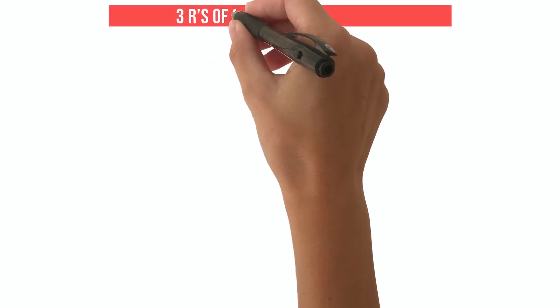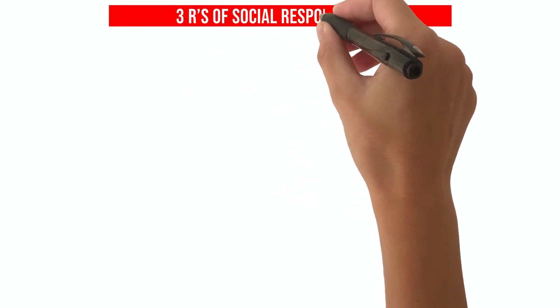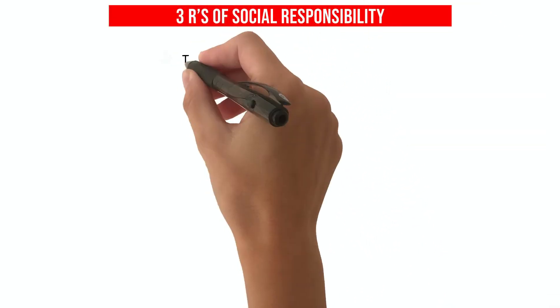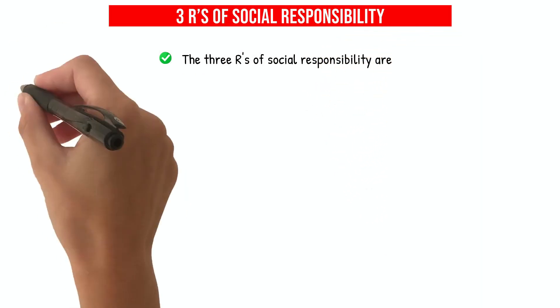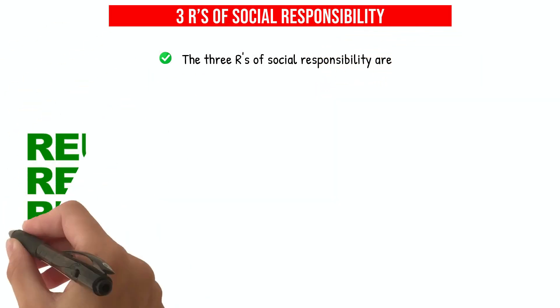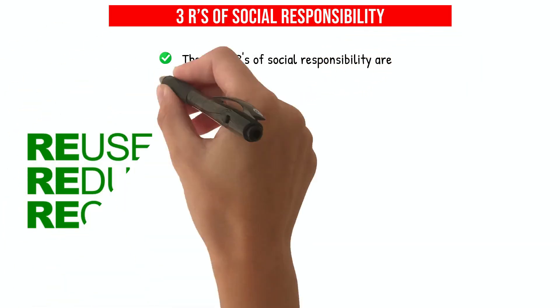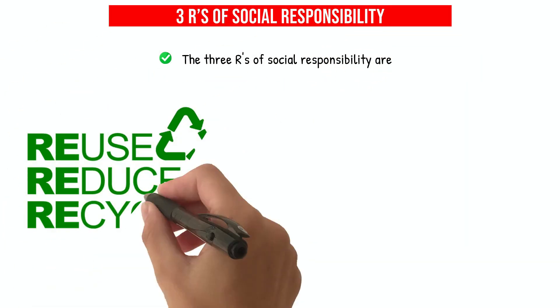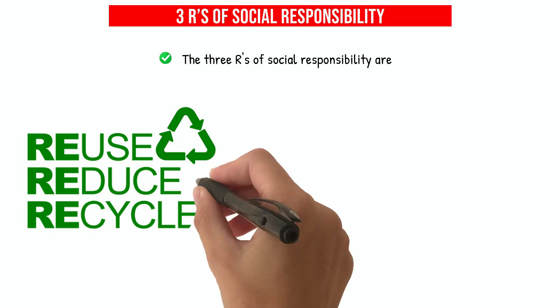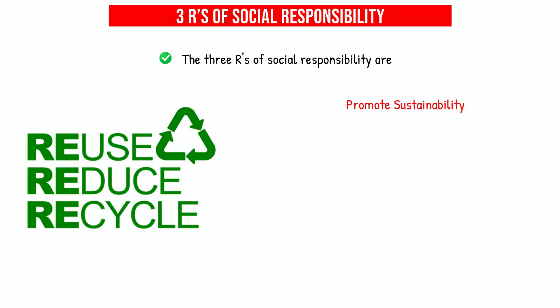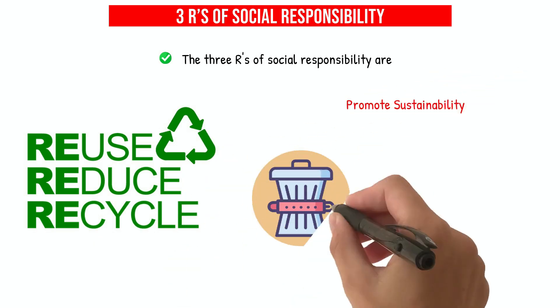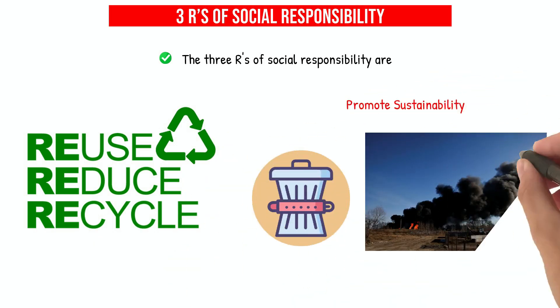The Three R's of Social Responsibility are Recycle, Reduce, and Reuse. These actions promote sustainability and help to minimize waste and environmental harm.